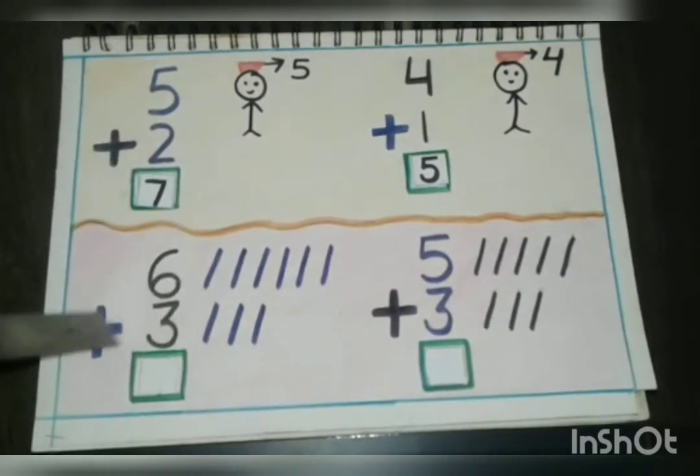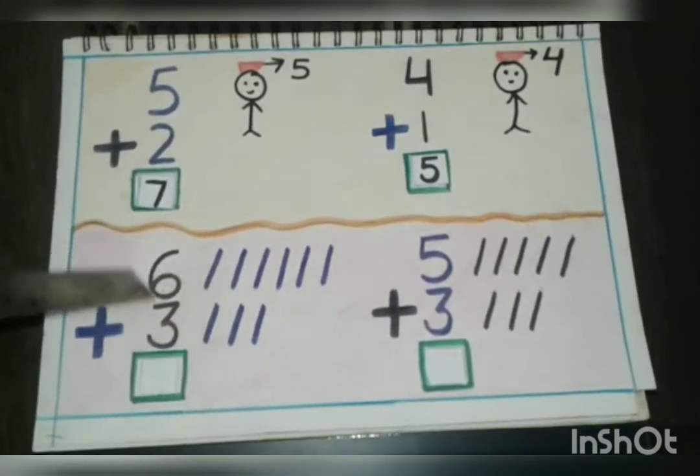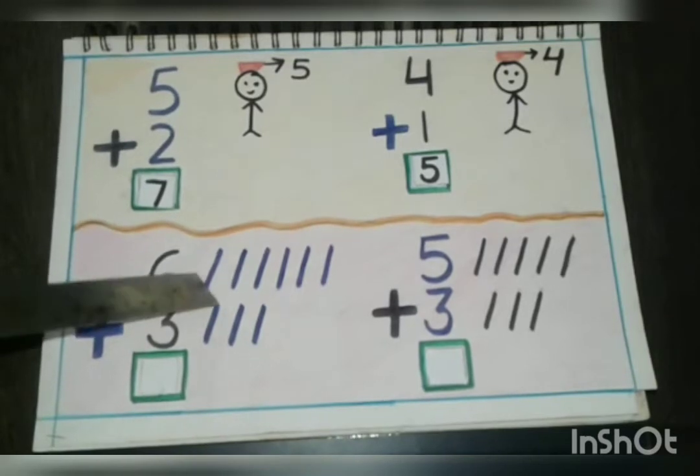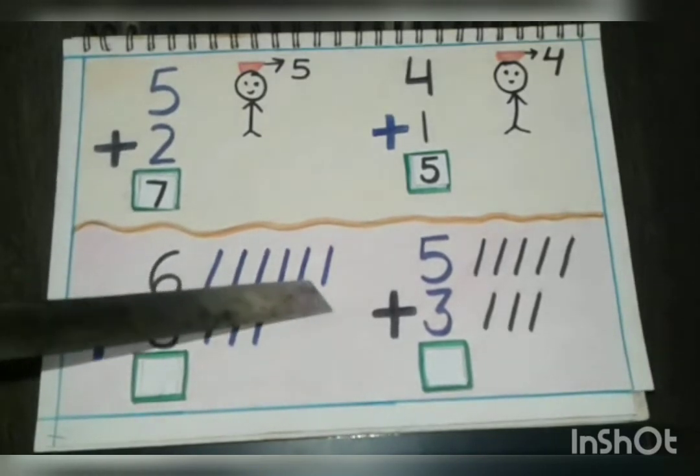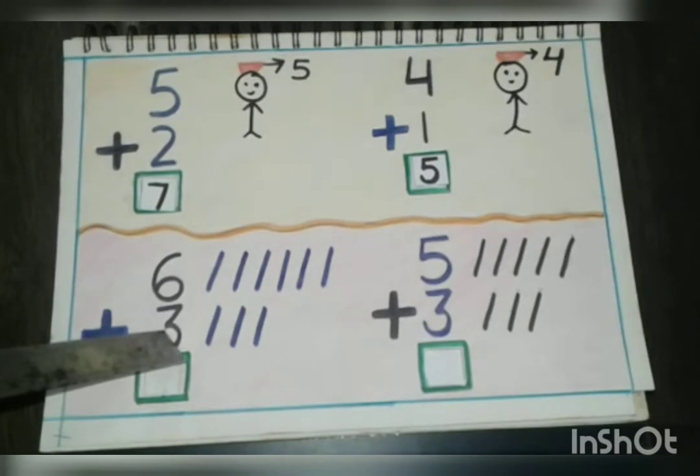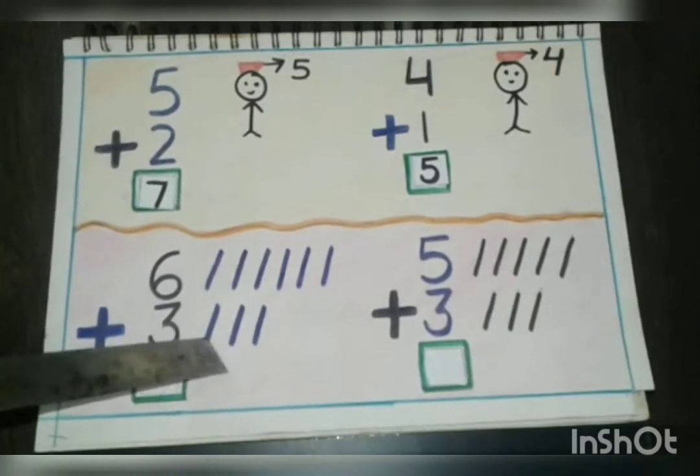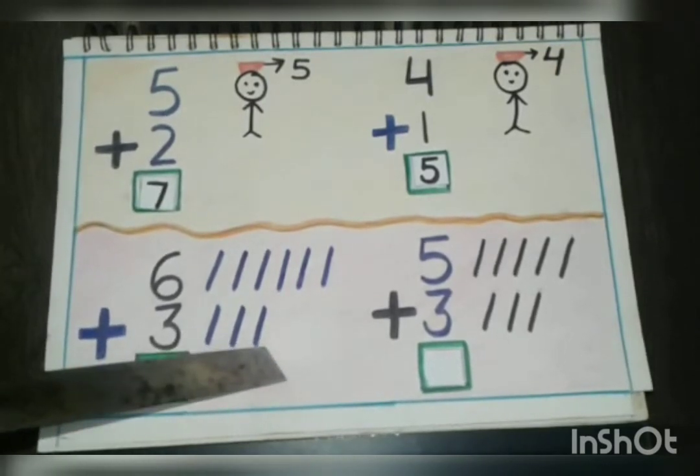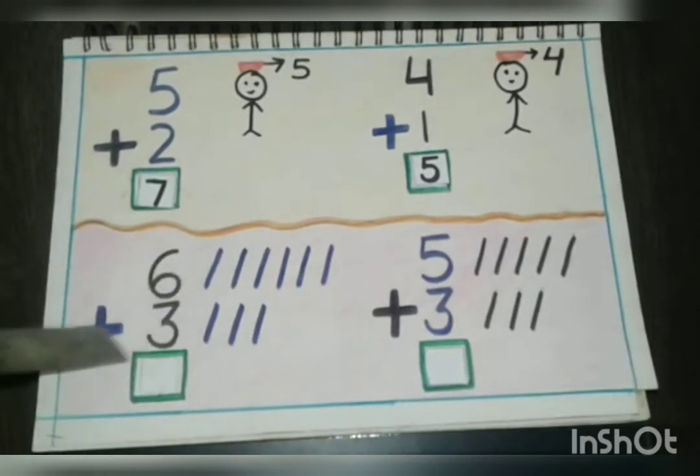Our numbers are six plus three. So we will draw six lines. One, two, three, four, five, six. And what is the next number? Three. So we will draw three more lines. One, two, three. Let's see what the answer is.